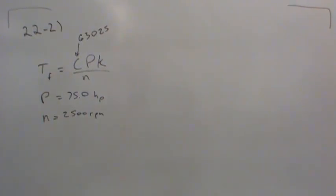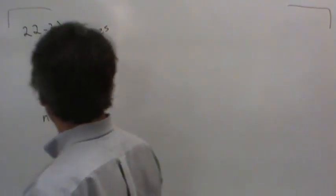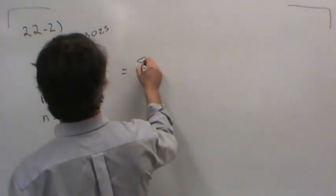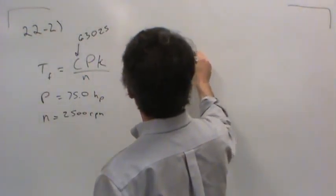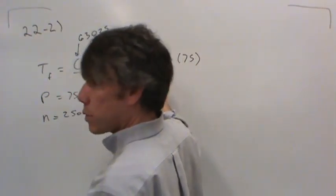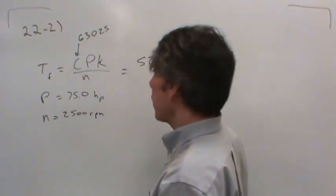So my conversion factor, instead of being 63.025, will be 5252, okay? So let's see, 5252, which is just the conversion factor. The power is 75 horsepower. Notice I'm not using units because I know I need to put the power in horsepower.